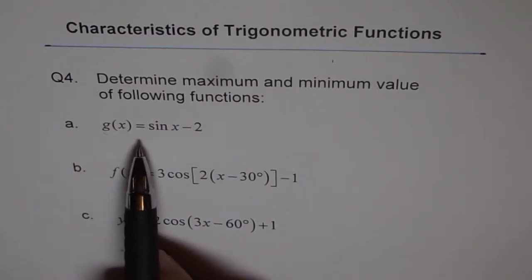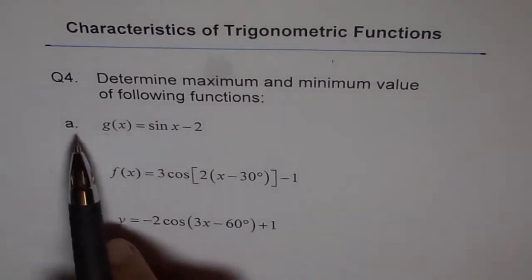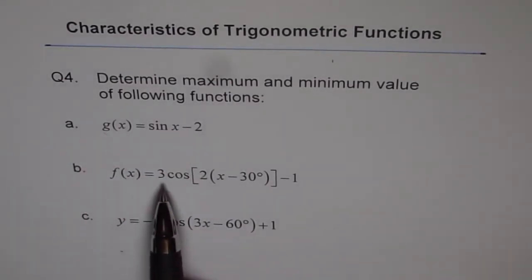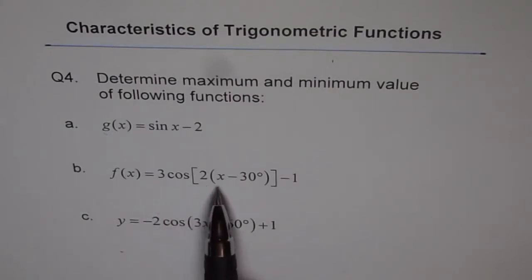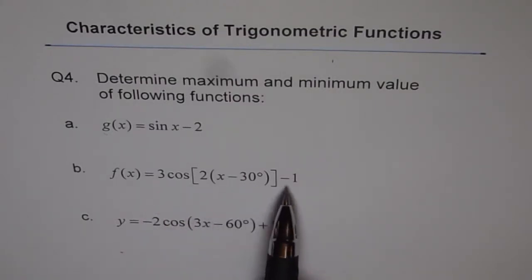We have g(x) equals sin x minus 2 as part a, and b is f(x) equals 3 cos of 2 times x minus 30 degrees minus 1, and c is y equals minus 2 cos of 3x minus 60 degrees plus 1.